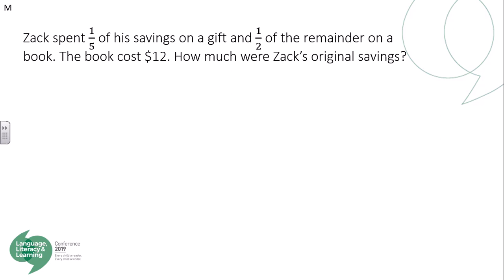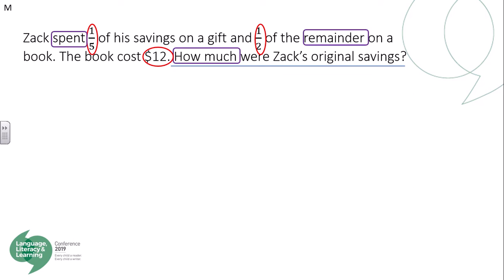Looking at this question: Zach spent one-fifth of his savings on a gift and one-half of the remainder on a book. The book cost $12. How much was Zach's original savings? We circle key numbers, underline the question, and box the key maths action words — it's really important we do this step each time. Zach spent one-fifth of his savings, then one-half of the remainder, which was $12. We need to find how much money Zach started with, so we go through one step at a time.